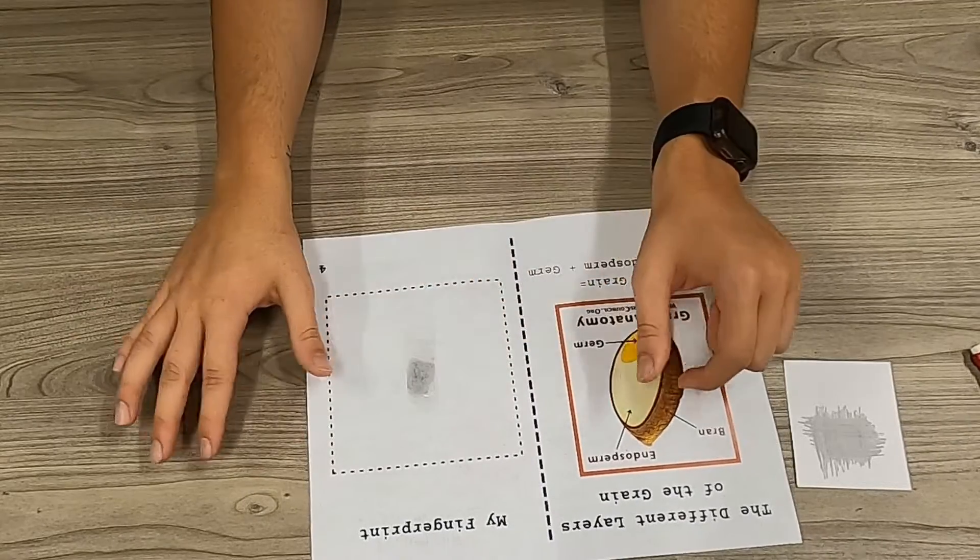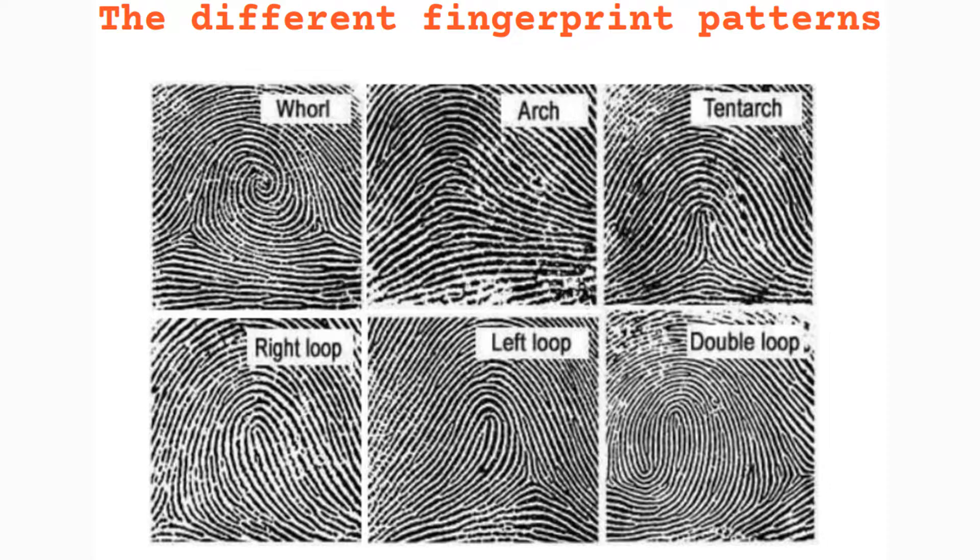If you look at the collecting fingerprints for evidence handout, you can also evaluate what type of fingerprint you have. For my fingerprint, it is very loopy to the left, so it is a left loop.